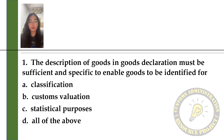Question 1. The description of goods in a goods declaration must be sufficient and specific to enable goods to be identified for: A. Classification, B. Customs Valuation, C. Statistical Purposes, or D. All of the above.